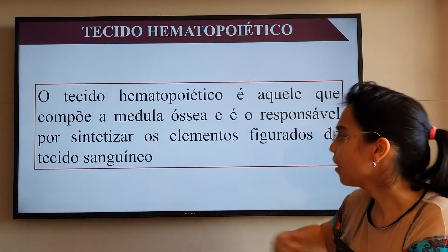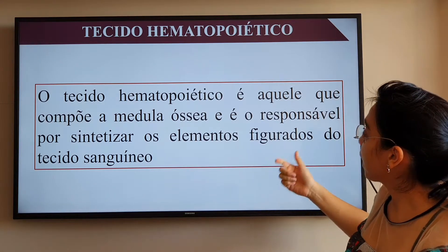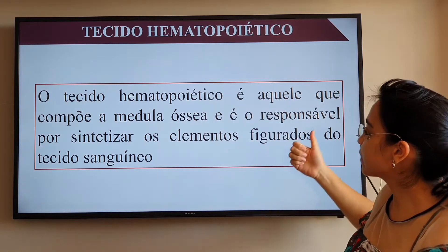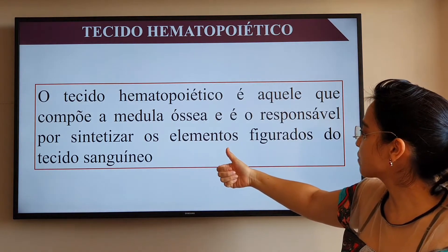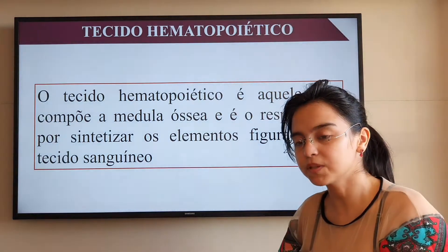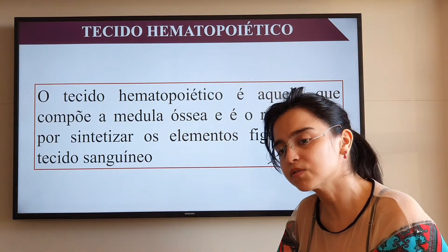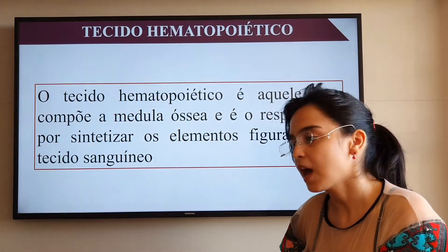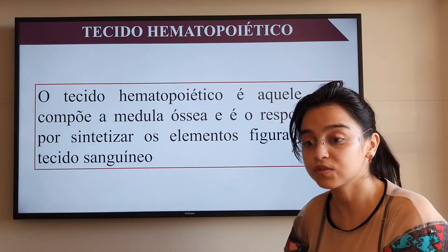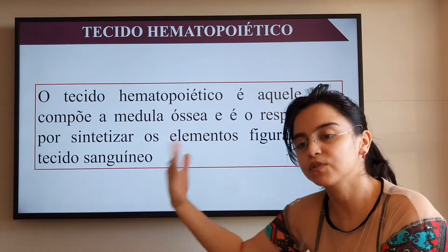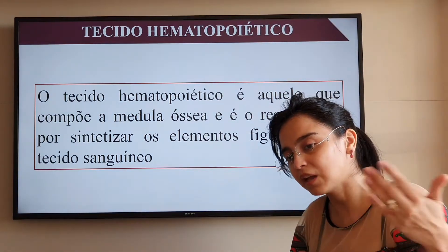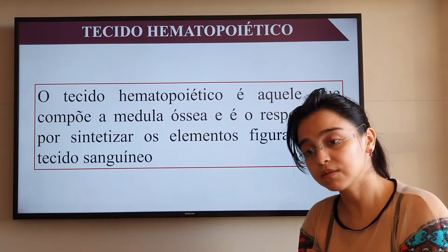O tecido hematopoético é aquele que compõe a medula óssea e é o responsável por sintetizar os elementos figurados do tecido sanguíneo — recordando que elementos figurados são todas as células do sangue: as hemácias, os linfócitos, os neutrófilos, os basófilos, os eosinófilos, os macrófagos — todas as células que detalhamos na aula de tecido sanguíneo.